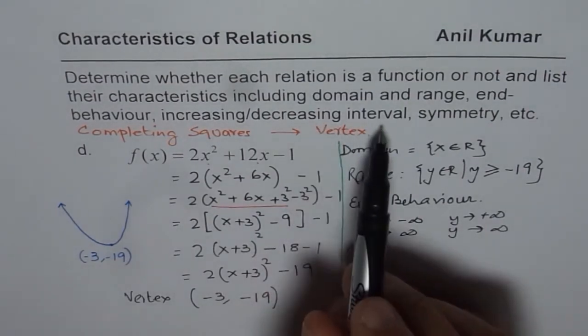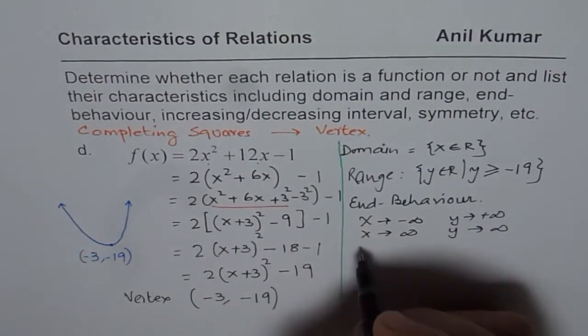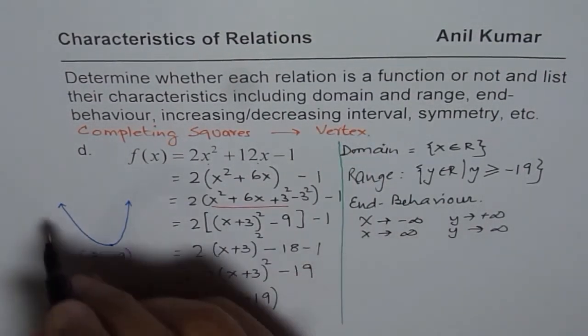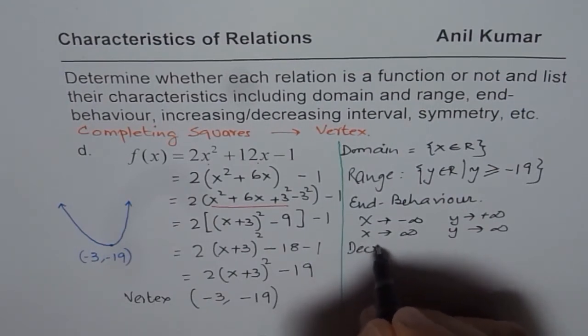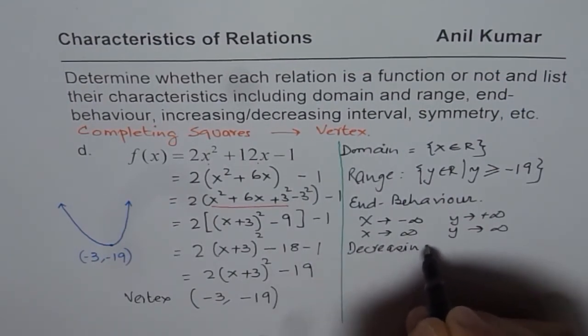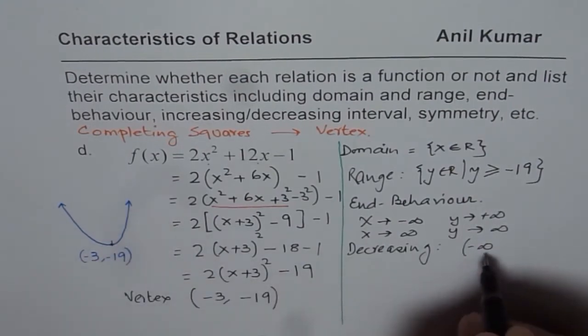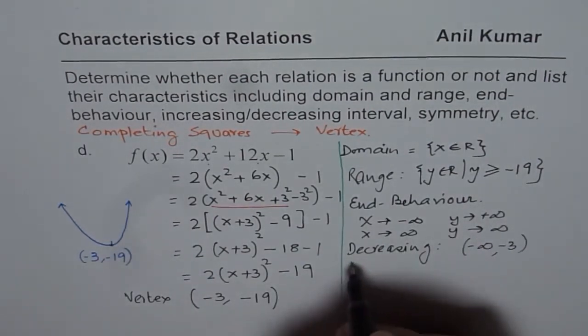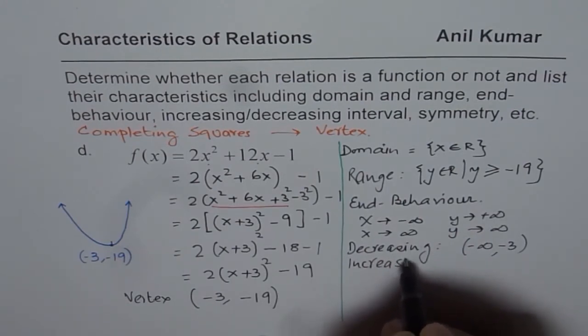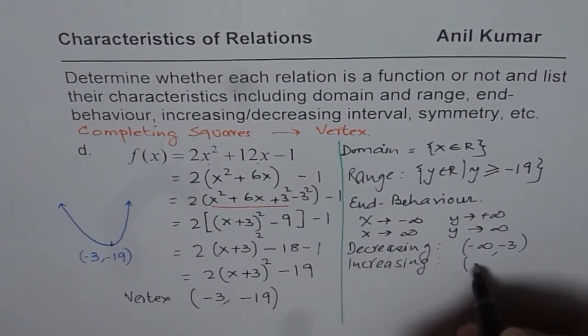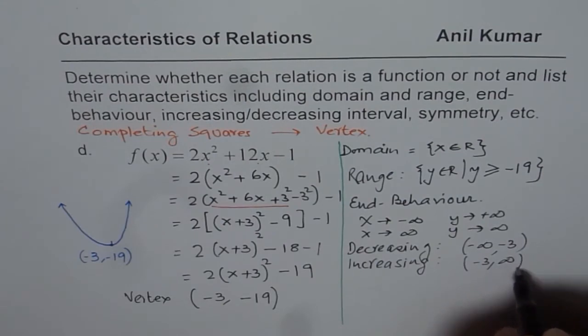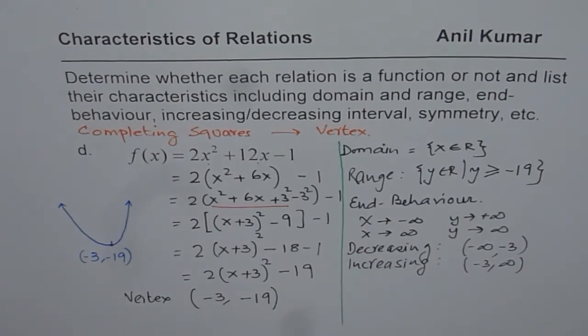Increasing and decreasing, the function increases. We can write decreasing first. Decreasing in the interval from -∞ to x = -3, and increasing from -3 to ∞. That is the increasing and decreasing interval.